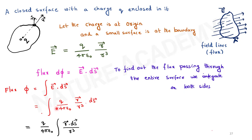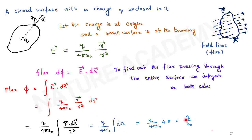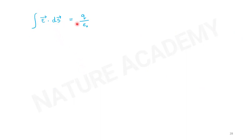For any closed surface, the flux passing through it equals Q over epsilon-naught, where Q is the charge enclosed. This is written as the integral of E-bar dot dS-bar equals Q over epsilon-naught. This is Gauss's law. The area element dS-bar has an outward normal n-cap, and the electric field at each point may be at an angle to it; integrating the dot product over the entire closed surface gives the total flux equal to the enclosed charge divided by epsilon-naught.